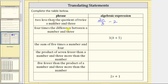The next phrase is 'four times the difference between a number and three.' Because the phrase reads 'four times the difference,' let's first write the difference. For the unknown number, let's use the variable a. So the difference between a number and three, or a and three, is a minus three. But the phrase reads four times the difference, which means we have four times the quantity a minus three.